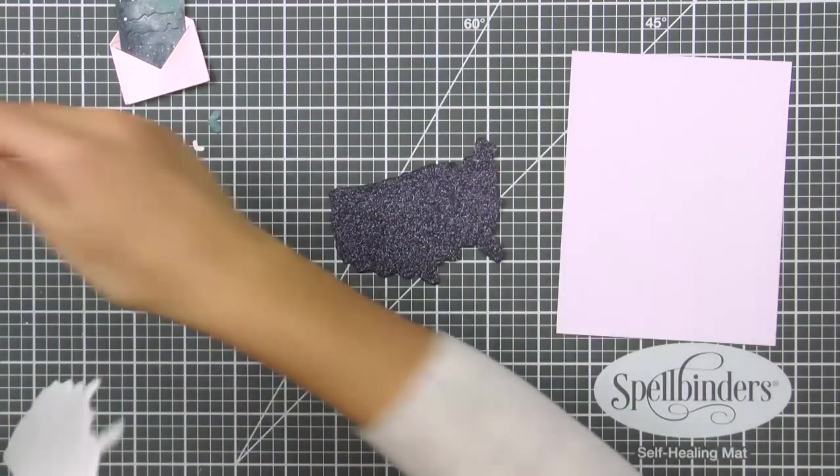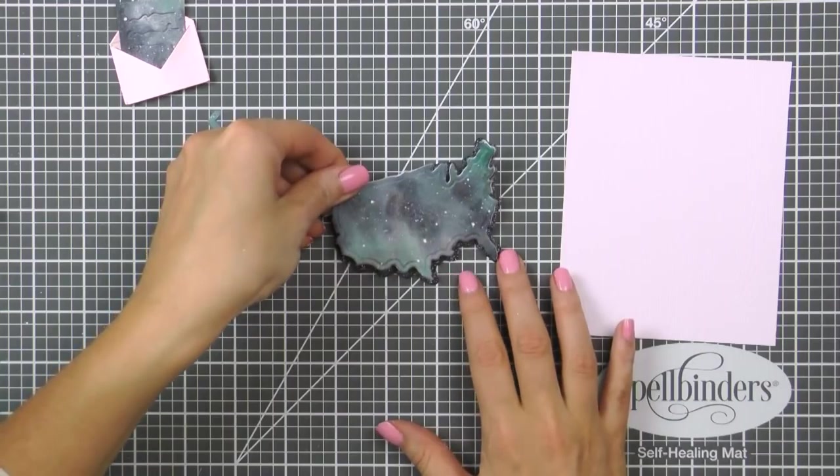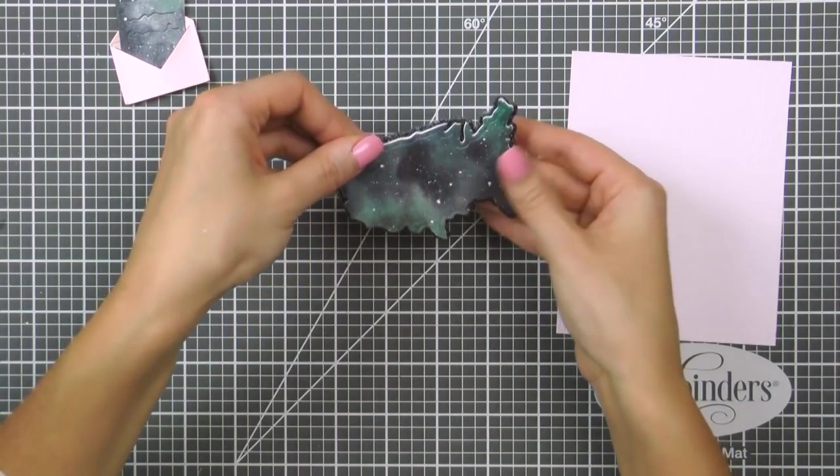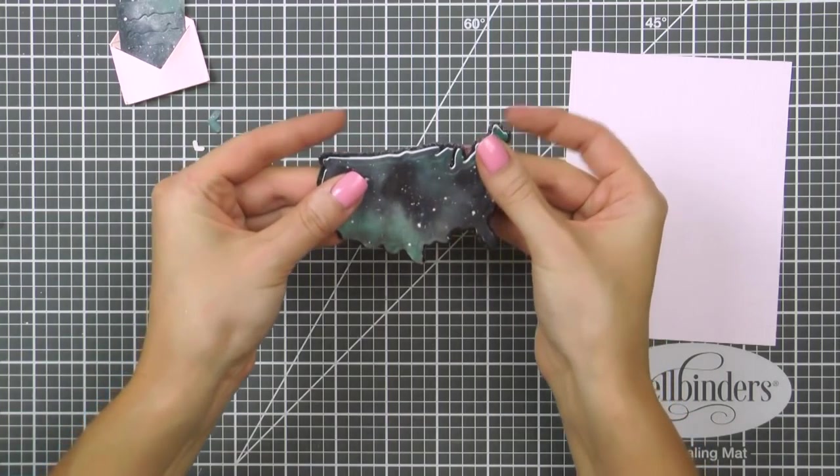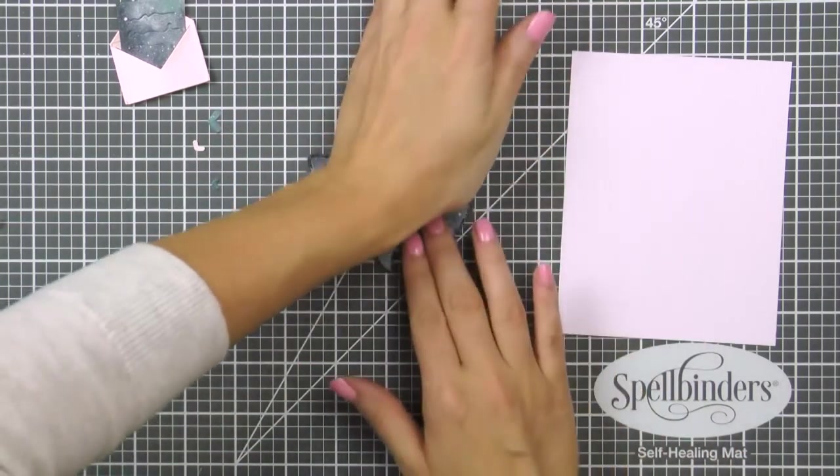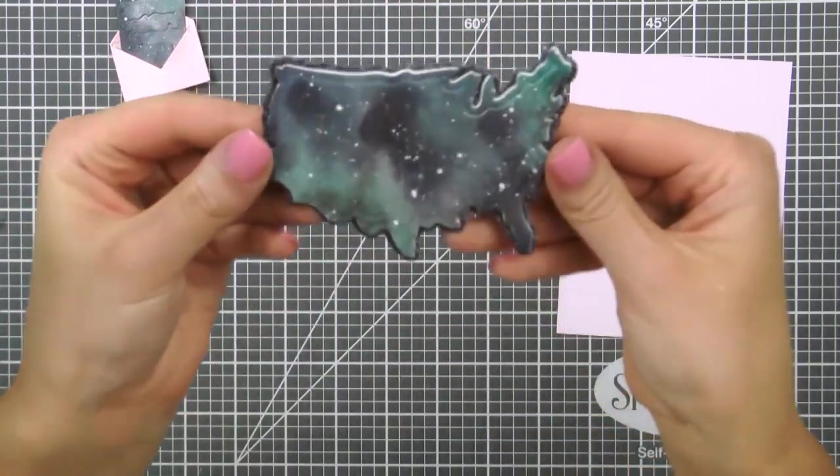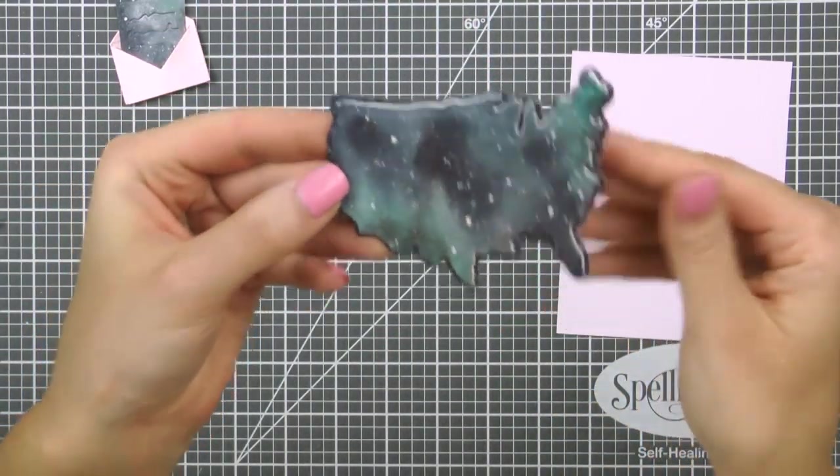I'm going to adhere the galaxy map onto the fun foam map and this is why I added the adhesive to this piece so that I'm able to easily adhere things together. I honestly don't like to fuss around with glue when I work with these kind of things. And I'm going to adhere this onto the glitter map and will adhere the entire piece onto the wood grain panel.